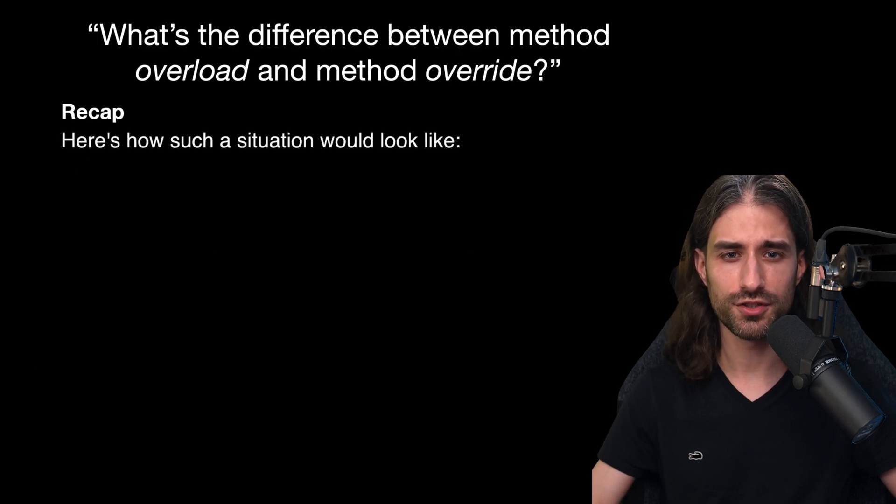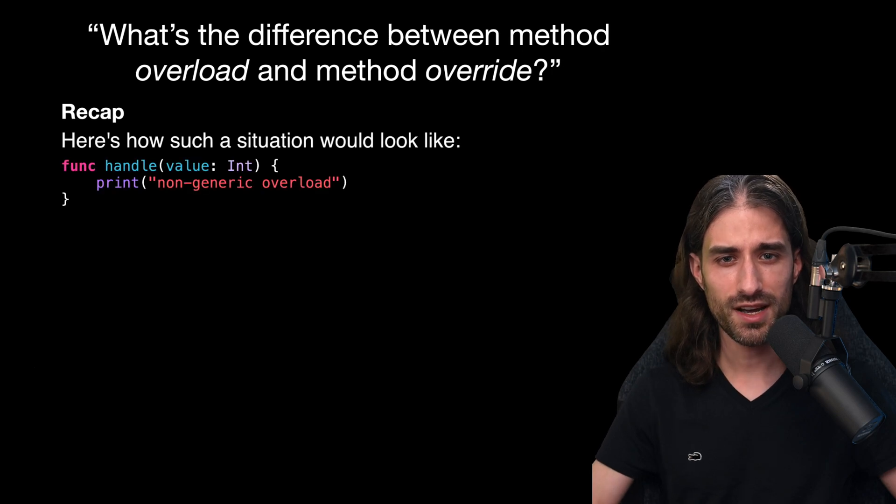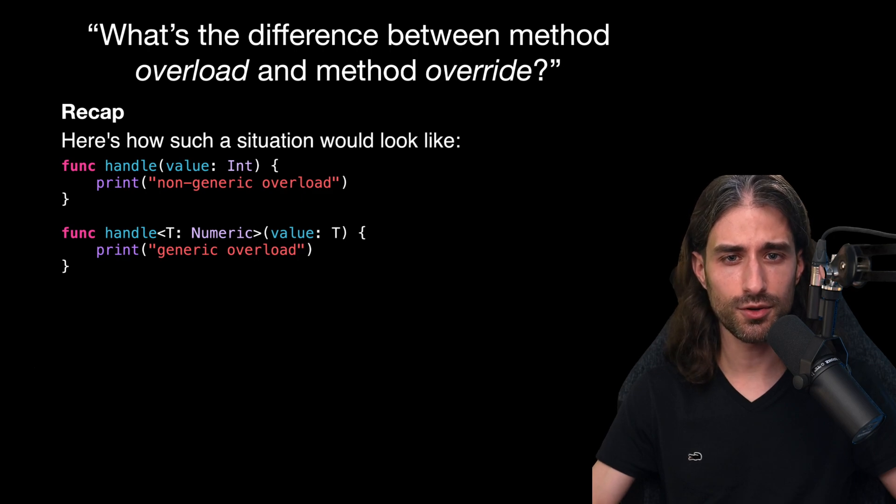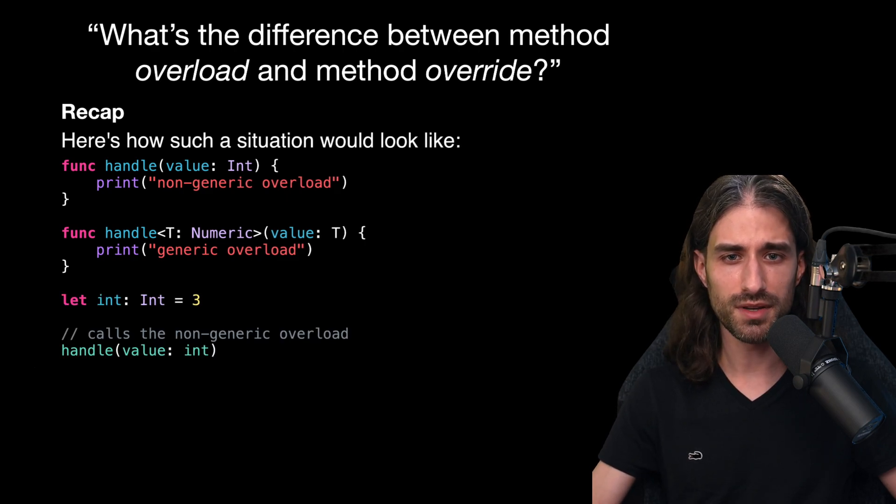Here's an example of how such a situation would look like. We have a first overload that expects the concrete type int, then we have a second overload which uses a generic type that is constrained to implementing the protocol numeric. If we try to call that method with a value that is statically typed as an integer, even though both overloads would be matching candidates according to the type of the value, Swift will prefer using the overload that expects a concrete type int over the overload that expects a generic type that conforms to the protocol numeric.